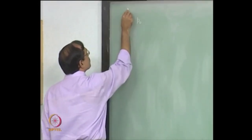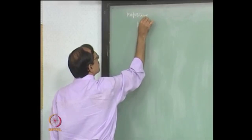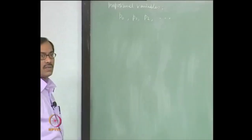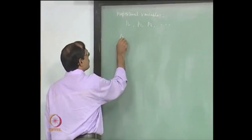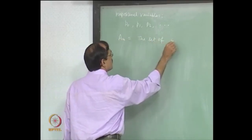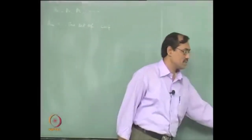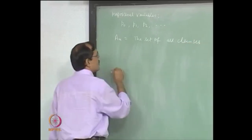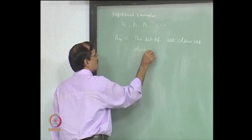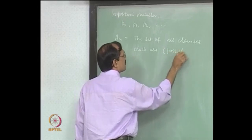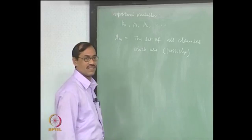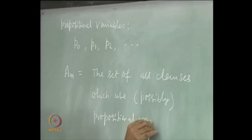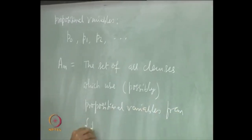We are at the enumeration of propositional variables. Then we introduced one special set of CNFs. We call it A_m, which is the set of CNFs — or rather clauses — A_m itself is a CNF. It is the set of all clauses which use propositional variables from the first m variables. They may not use every one of them, but they do not use anything beyond these.